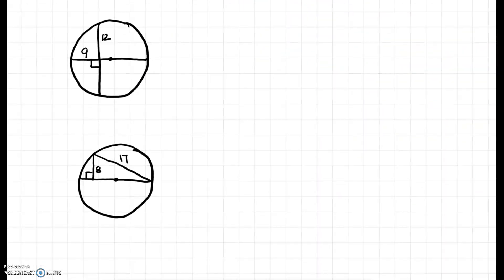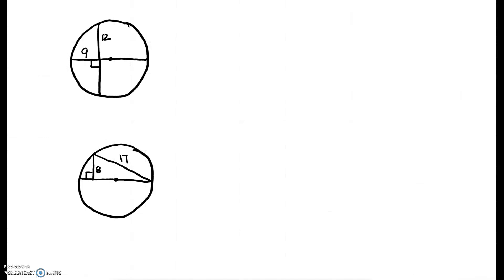Now we're going to find the diameter in this one as well. The diameter is the line that goes through the center. Take a look at this — there is a chord from here to here, and it's being intersected by a perpendicular line that goes through the center. That tells me that this perpendicular line, this diameter, is a bisector of this chord. So not only is this part 12, but this other part is also 12. It has to be perpendicular and go through the center of the circle.